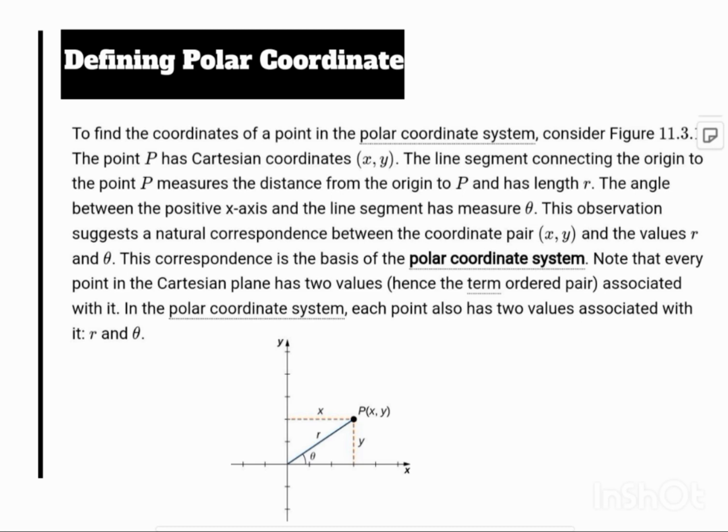Note that every point in the Cartesian plane has two values (hence the term ordered pair) associated with it. In the polar coordinate system, each point also has two values associated with it: r and θ.